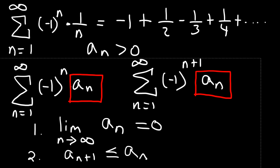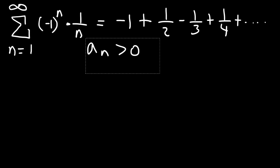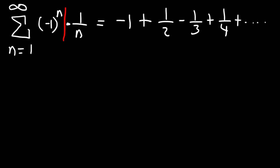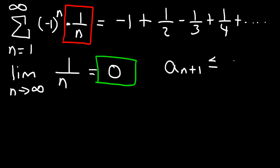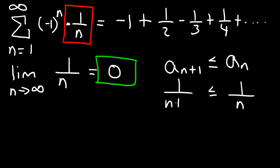Let's apply this to the problem at hand. First, define a sub n — here a sub n is 1 over n; the negative 1 to the n part just controls the sign. Taking the limit as n goes to infinity of 1 over n: 1 over infinity converges to 0, so the series passes the divergence test. Now we need to see if it's a decreasing sequence, showing that a sub n plus 1 is less than or equal to a sub n. A sub n is 1 over n, and a sub n plus 1 is 1 over n plus 1.